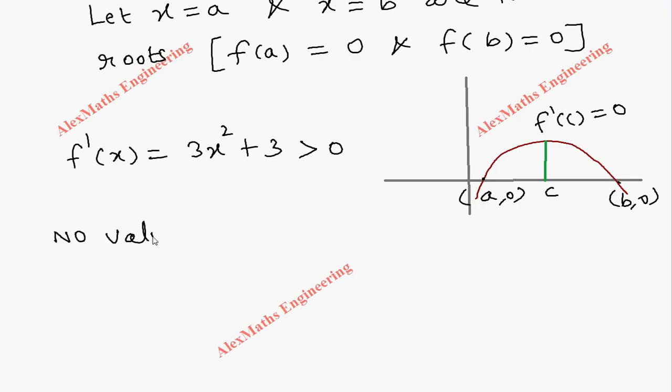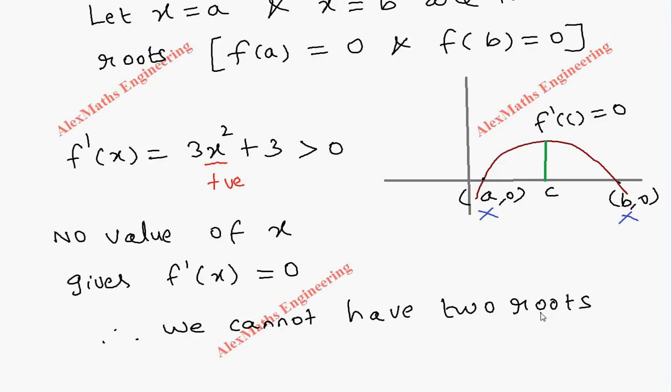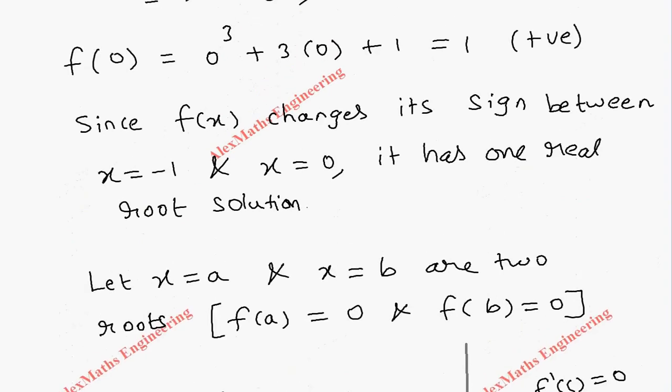No value of x gives f'(x) = 0. Therefore, there is no c that exists, because whatever value substituted here, since it is x² is always going to be positive and plus 3, totally it is always a positive value. So we cannot have a value c between a and b. Since we cannot have the value c, it clearly shows that we cannot have two roots a and b like this.